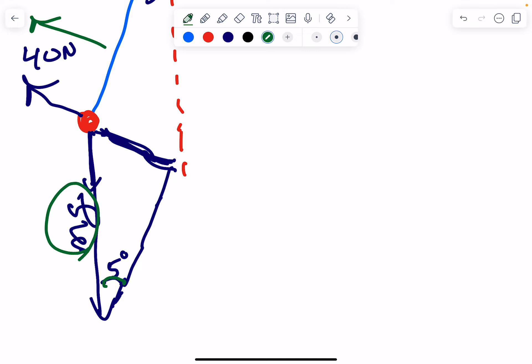So I can say this is the hypotenuse. This is the angle. This is the opposite, right? So I can say sine of angle, sine theta, is equal to the opposite over the hypotenuse, right?